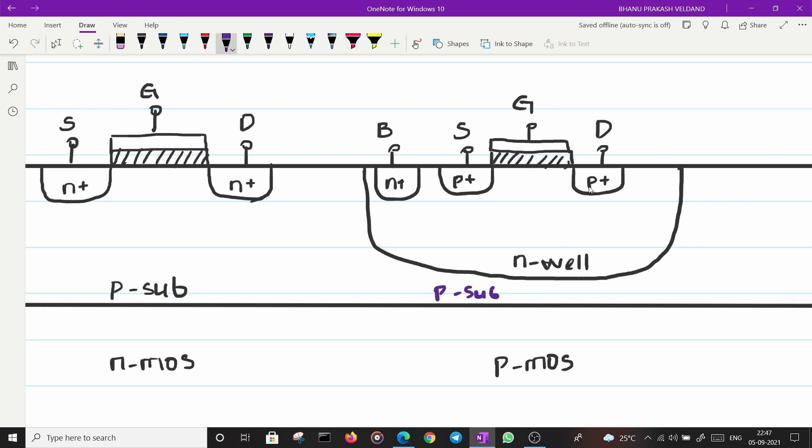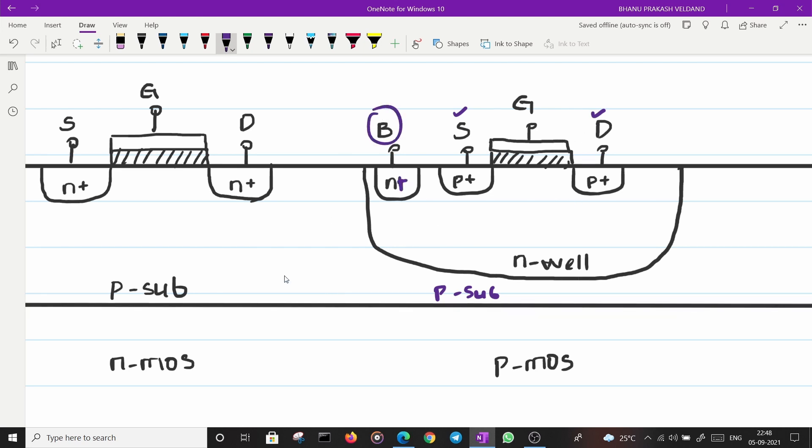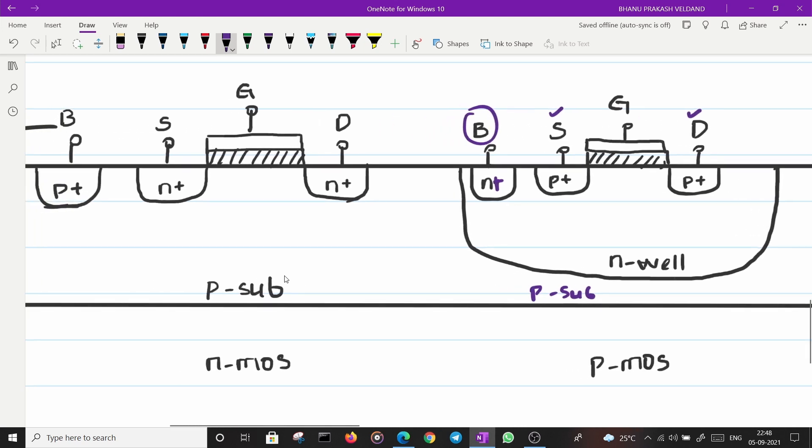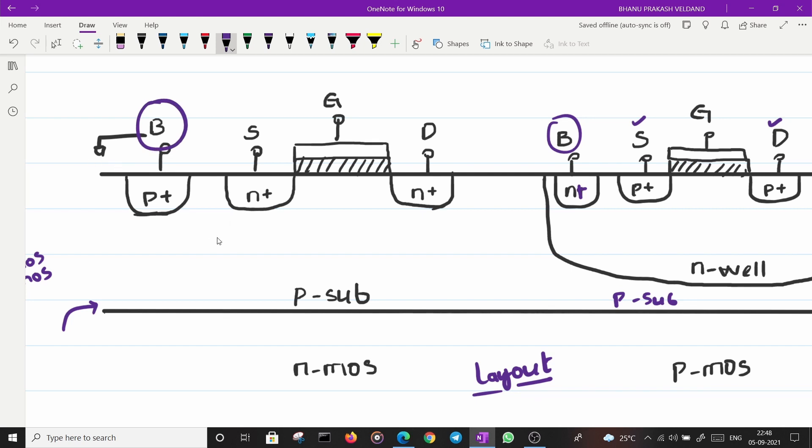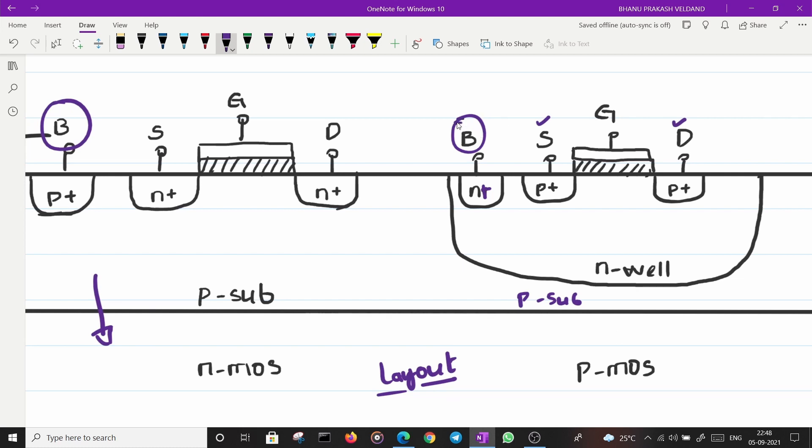On it you do P plus regions for source and drain, you have gate connection, you have a bulk. Now here which has access to it. You have access to this bulk terminal, you can connect to any voltage that you want. But the bulk of NMOS which is the P substrate is always connected to ground by default. There is no control over the substrate which is the bottom most thing. But you have the control over this bulk terminal of PMOS. You can connect it to any voltage but people generally connect it to VDD.